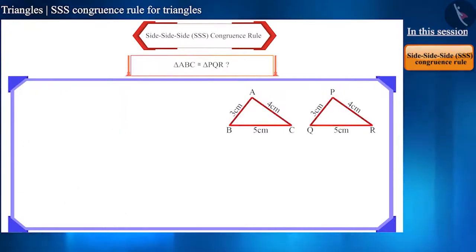But, in these triangles, no information is given about the angles. Only the length of the sides are given. So, how can we check the congruence of these triangles?